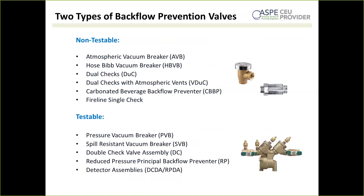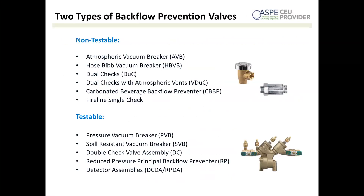One way of grouping backflow preventers is testable versus non-testable. Testable is desirable because you can check functionality, but these devices are typically larger and more expensive, which can be overkill. Many jurisdictions don't require residential containment backflow to be testable due to the cost to the homeowner, but will require testable backflow on commercial containment. North American building codes typically require testable devices to be tested when installed, when repaired, and annually to ensure proper function.